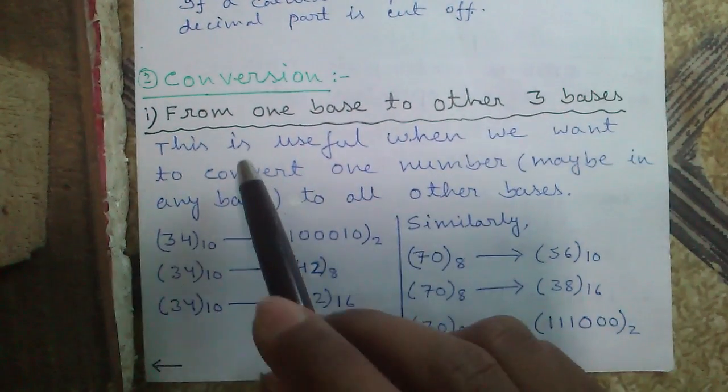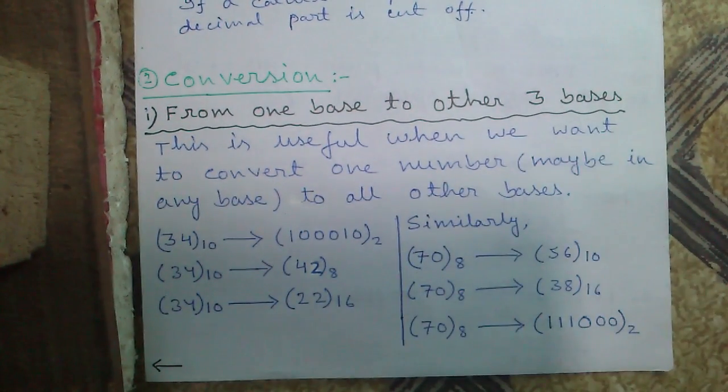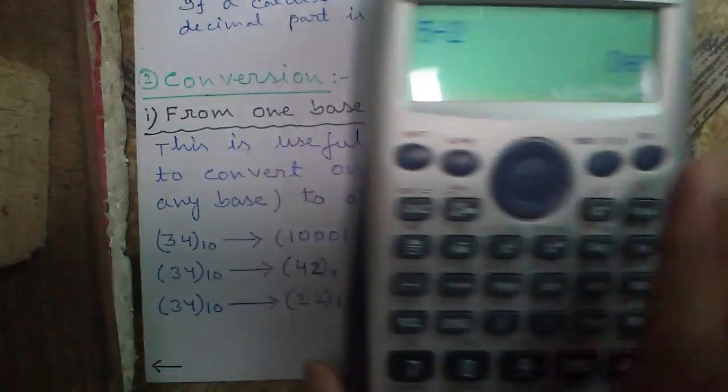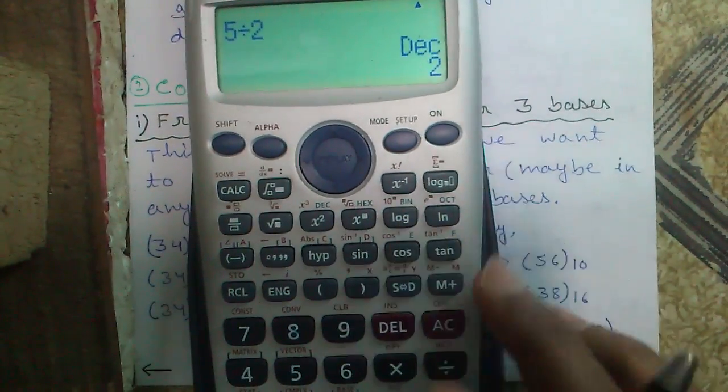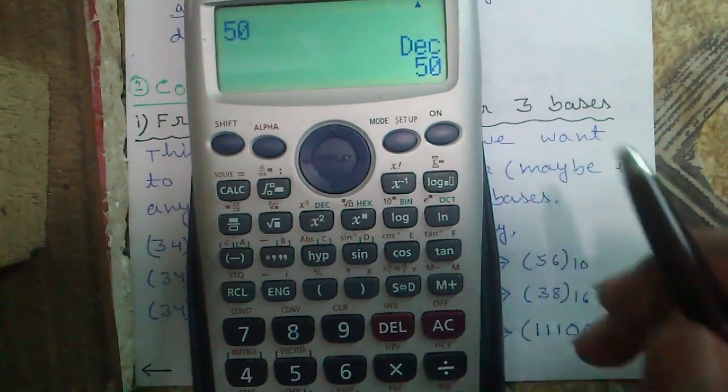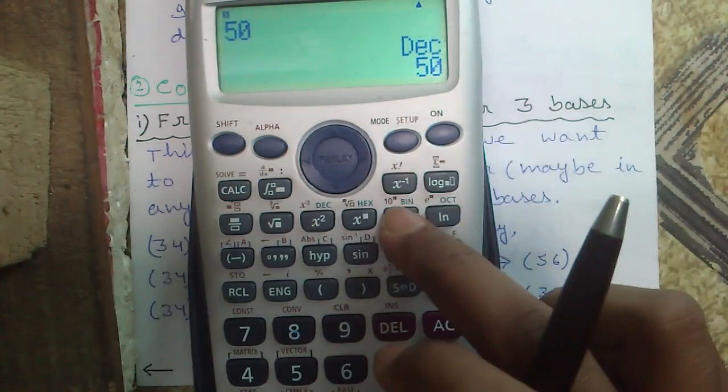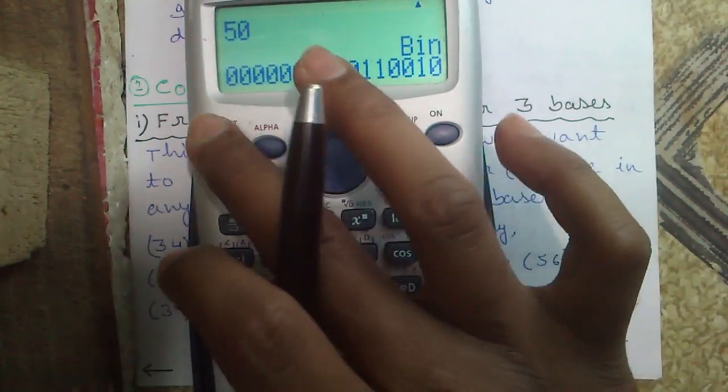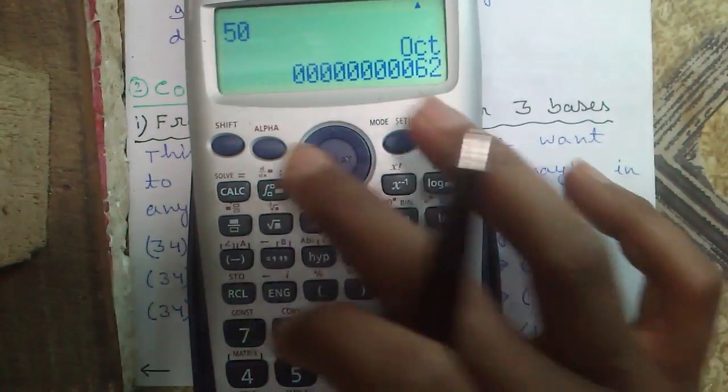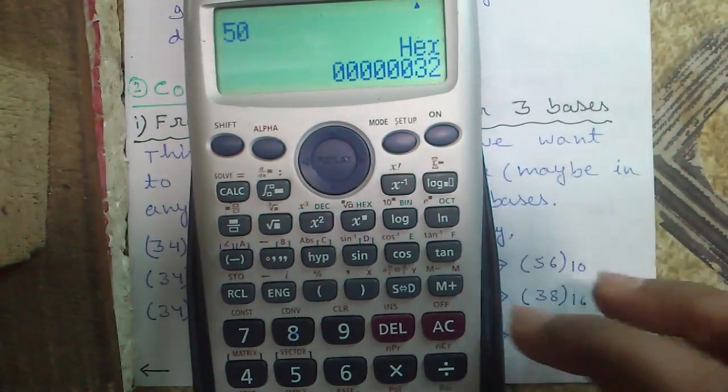Now to the conversion, from one base to other three bases. Here the source base will be same and destination base will vary. For example, 15 decimal, 15 binary, 15 octal and 15 hexadecimal.